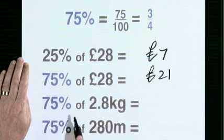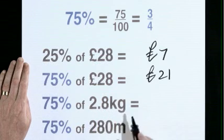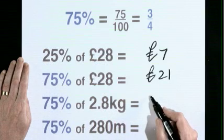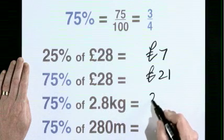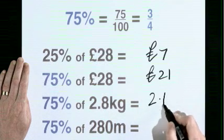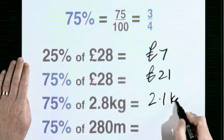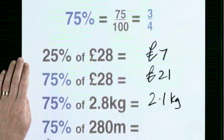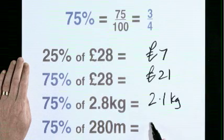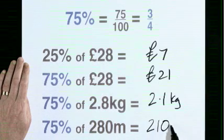75% of 2.8 kilograms is 2.1 kilograms. 75% of 280 metres is 210 metres.